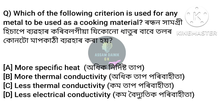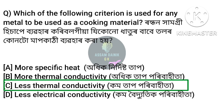Next question: which of the following criterion is used for any metal to be used as a cooking material? Answer: Option C, less thermal conductivity. A metal with low thermal conductivity is used as a cooking vessel material.